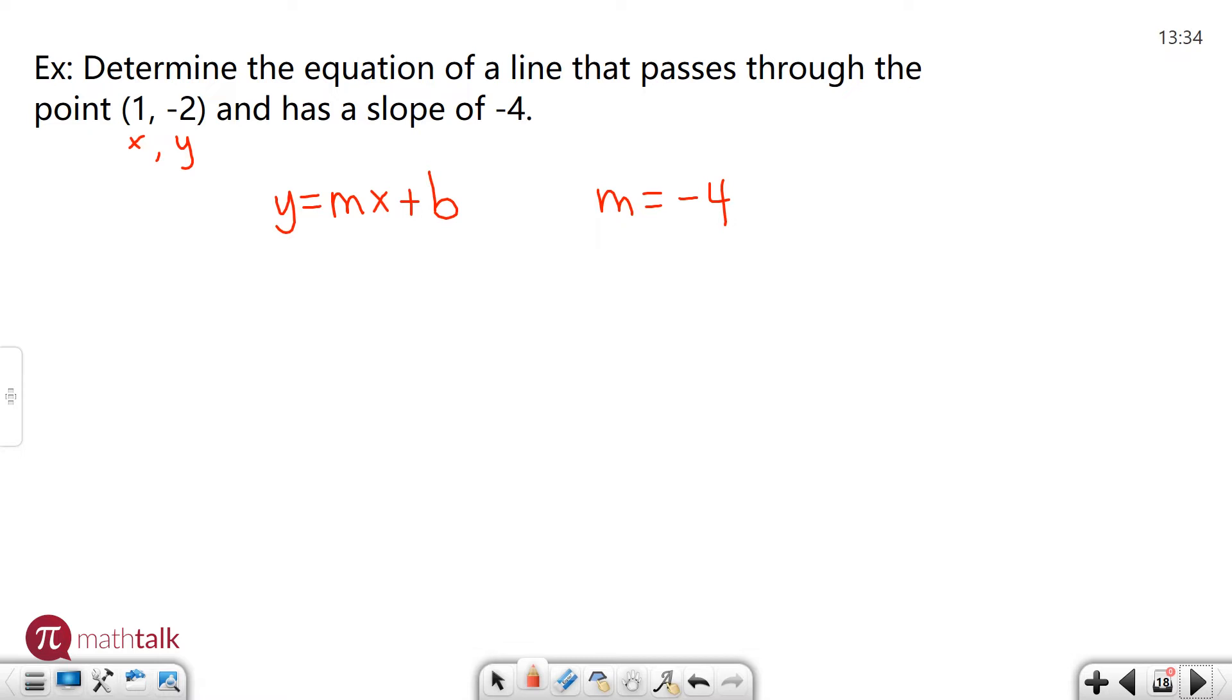I'm going to plug in negative two for y equals negative four for m, your slope, and x is one plus b. Now this becomes an algebra problem where I need to solve for b. So negative two equals negative four times one is negative four plus b.